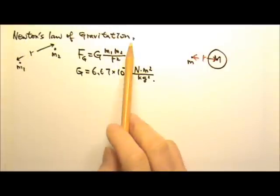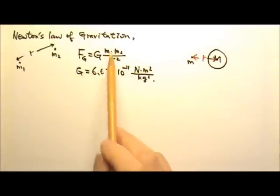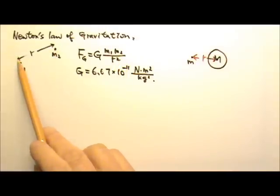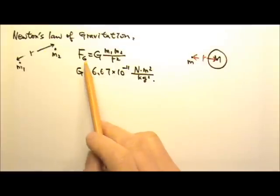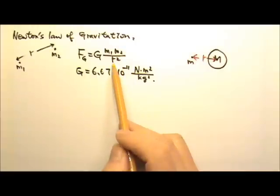Now let's see, Newton's law of gravitation is what we use to find the gravitational force between two objects. Let's say M1 and M2, they are distance r apart.